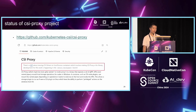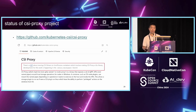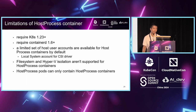Next, about the status of the CSI proxy project. Due to the reasons mentioned earlier, the CSI proxy has been transformed. It used to run as a standalone process on the Windows node, and now it has been transformed to a Go library which can be adopted by older drivers using host process containers. We are still working on this and it's currently in alpha stage.